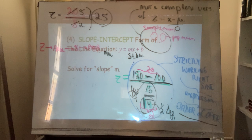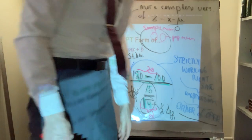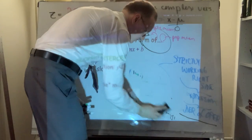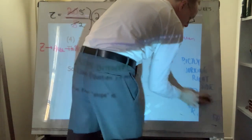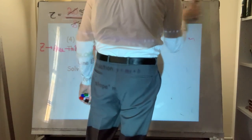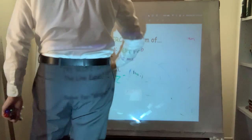The slope-intercept form of a line equation is y = mx + b, for slope m. This is not inputting values — it's just practicing rearranging to solve for a particular variable. Solve for m essentially means isolate m.